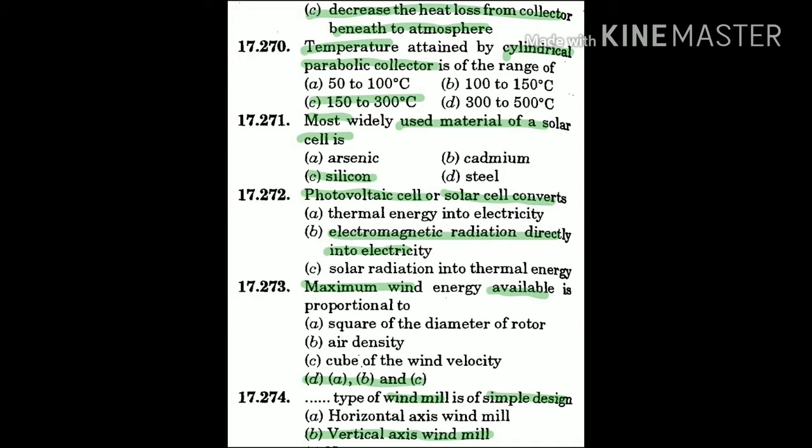Question 270: Temperature attained by a cylindrical parabolic collector is in the range of — the answer is C: 150 to 300 degrees Celsius.